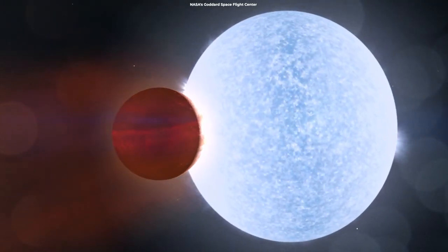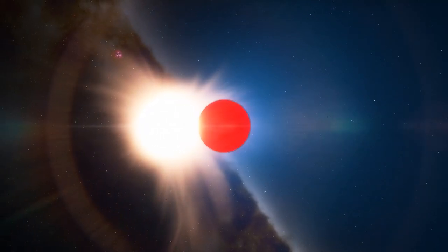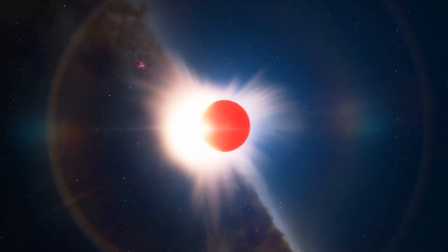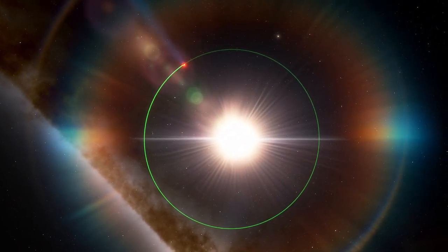WASP-96b orbits extremely close to its sun-like star, just one-ninth of the distance between Mercury and the sun, completing one circuit every three and a half Earth days.